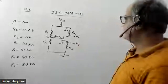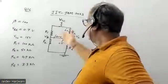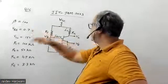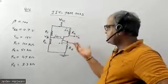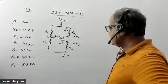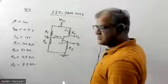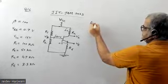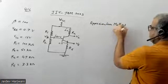Hello students, see this question on transistors from IIT JAM 2023, question number 16. They have given a voltage divider circuit with resistance values and beta, the current gain is 100. They are asking what is VC. This type of circuit we can solve by two methods: the exact method and the approximation method. Both give almost the same value, so the approximate method is slightly faster.